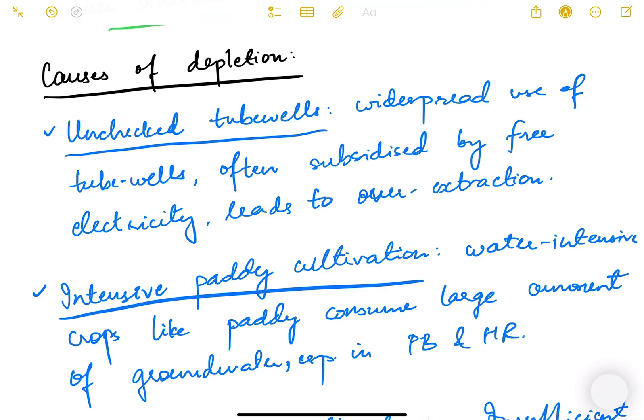Number one is unchecked tube wells. People keep digging tube wells wherever they want and withdraw an unchecked, unbridled amount of water. Widespread use of tube wells, often subsidized by free electricity, leads to over-extraction.